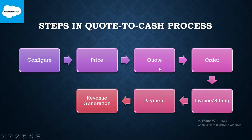After configuration, we'll generate quotes. Then approvals will happen — quote approvals — along with agreements like contracts between company and customer. Once that is done, the order will be placed and processed, and then shipment will also be done here. After shipment, invoice and billing will be done and the customer will be billed.